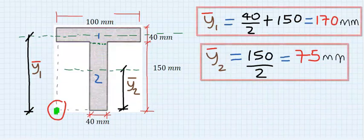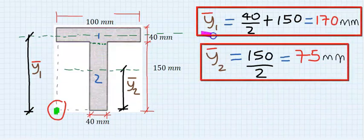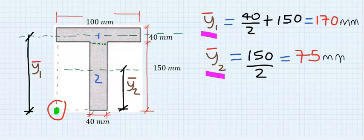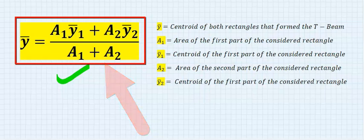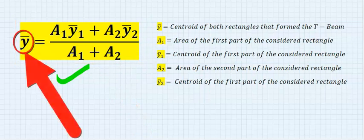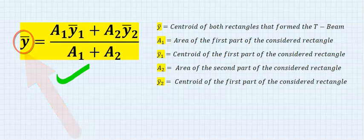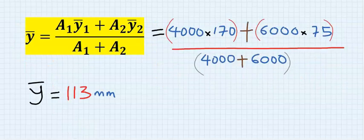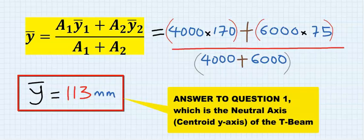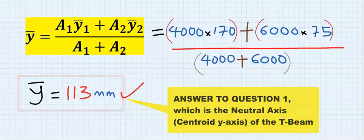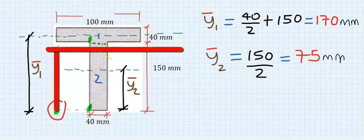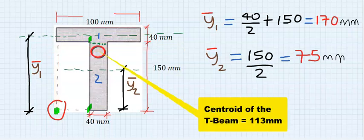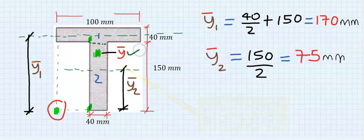Now that we have A1, A2, y1-bar, and y2-bar, we substitute into the formula to obtain the centroid of the T-beam, which is also called the neutral axis. Substituting and solving carefully, we find the centroid of the T-beam. From the reference point to the top is 150, meaning the centroid at 113 should lie somewhere in between.